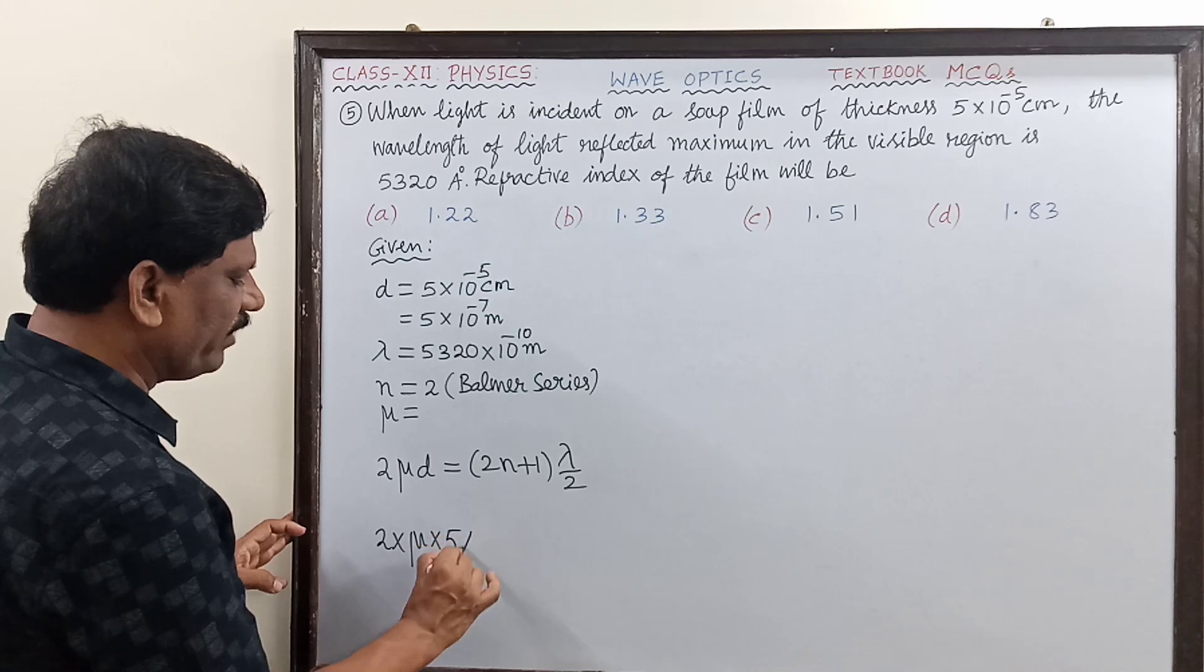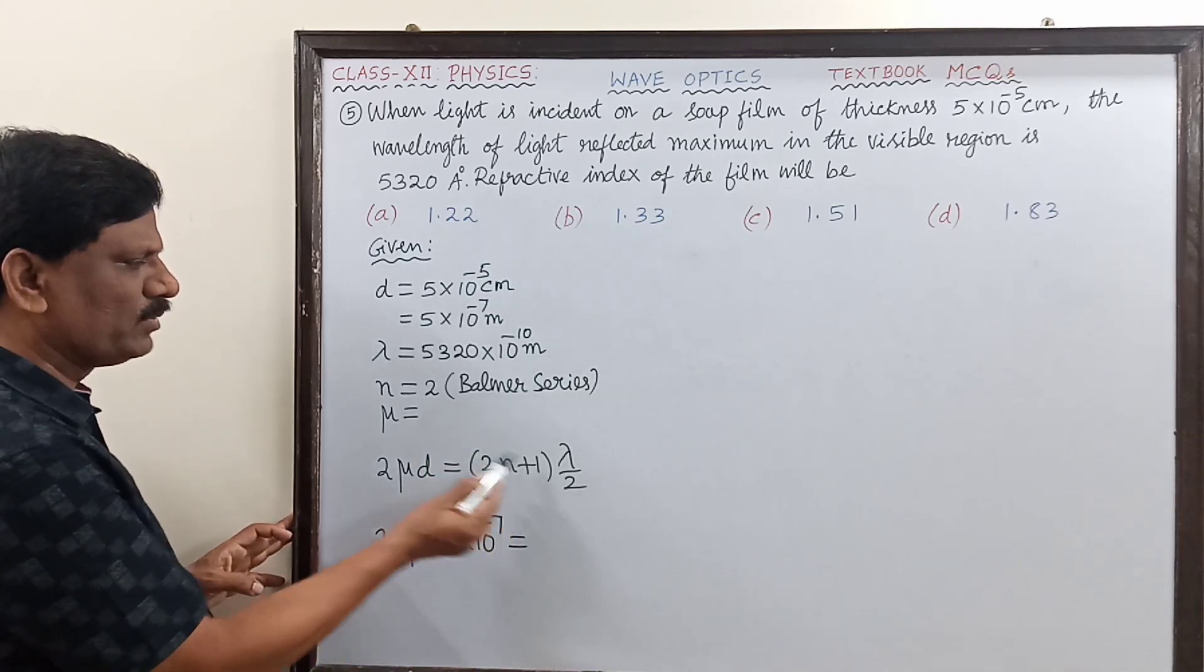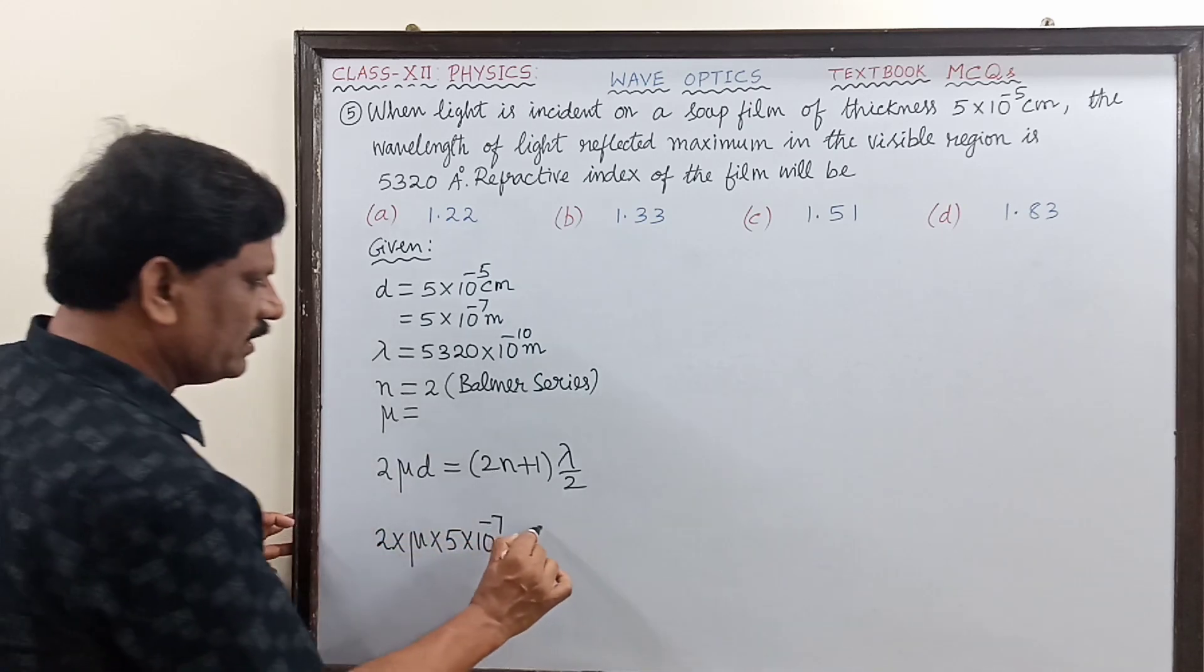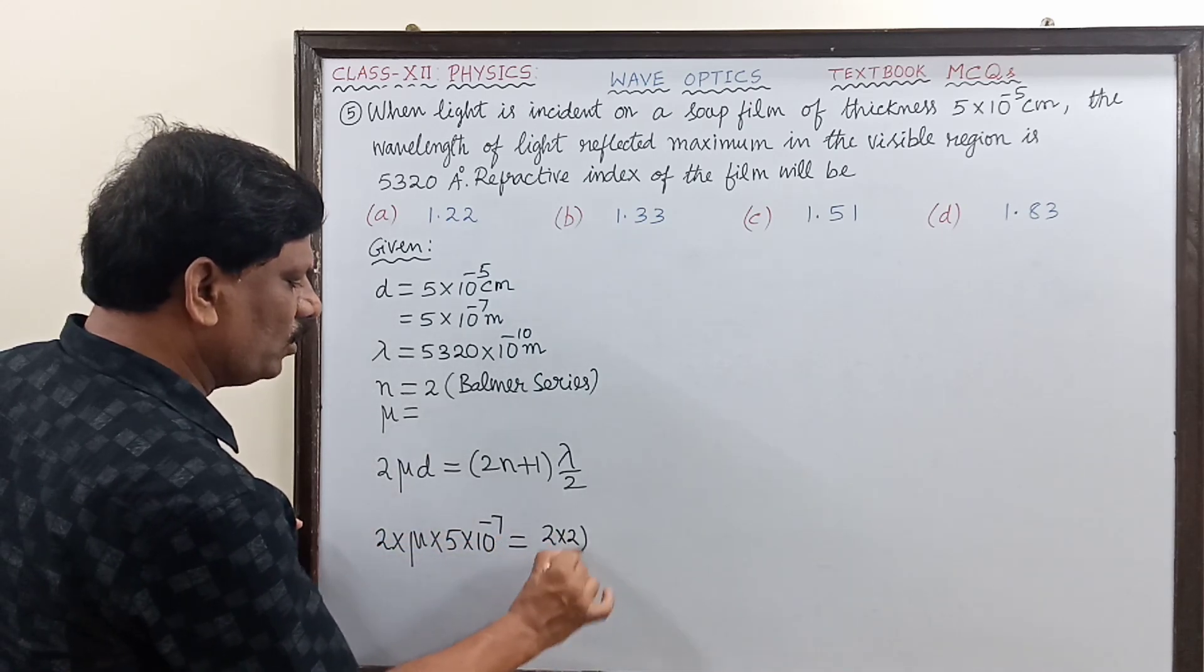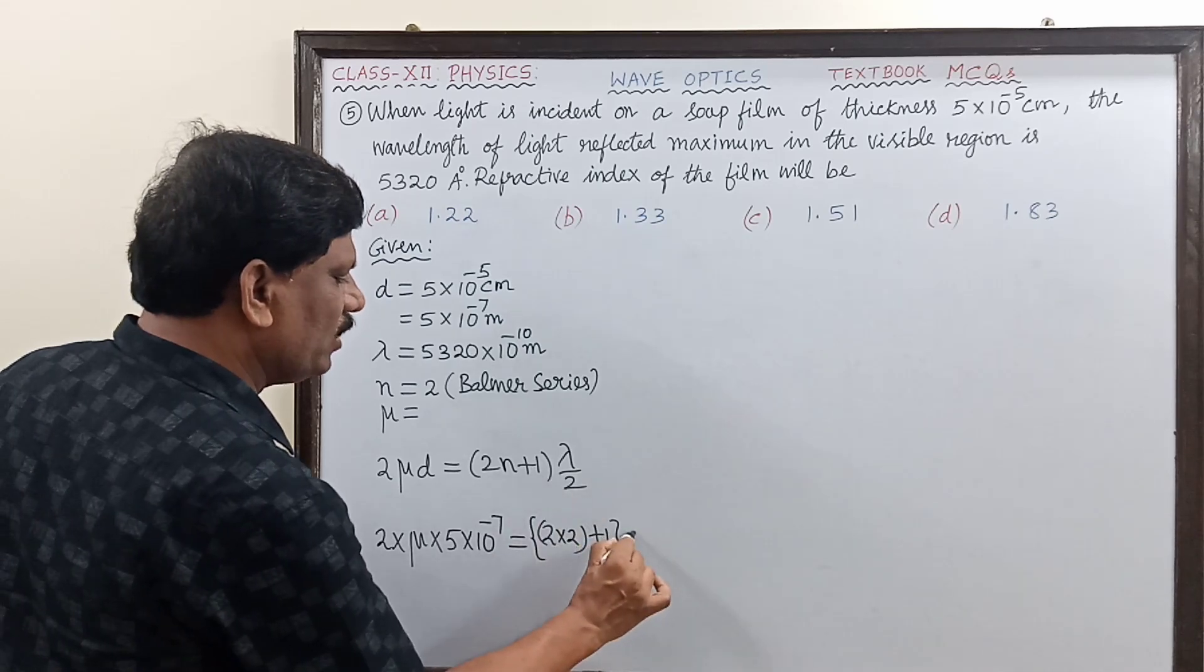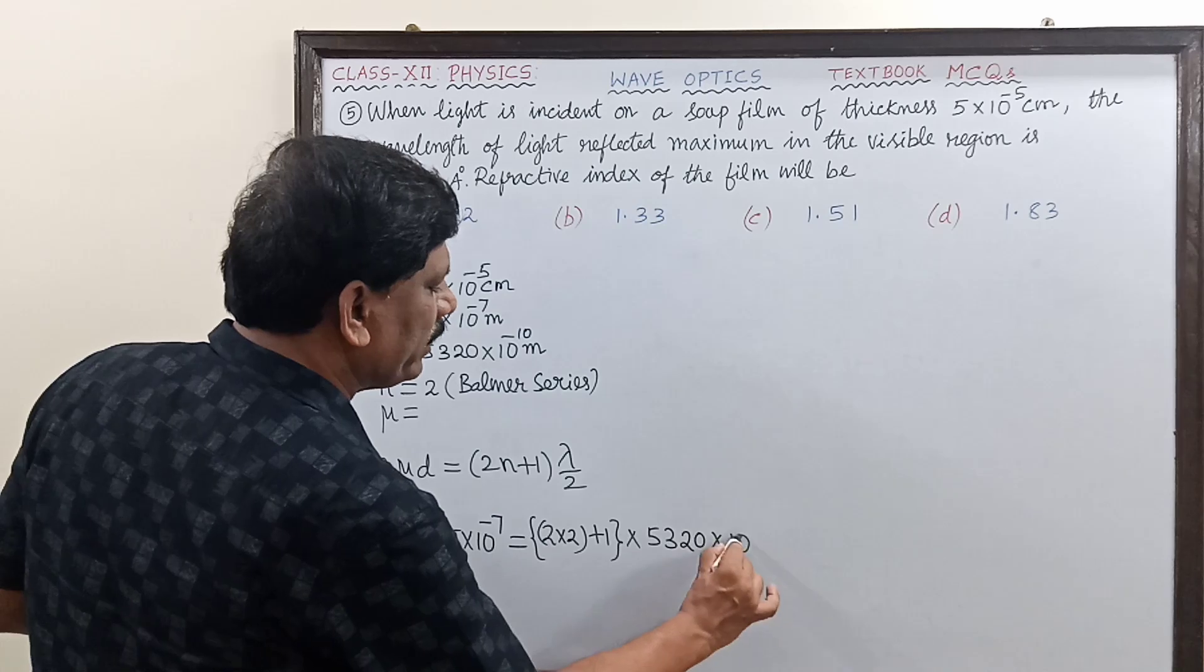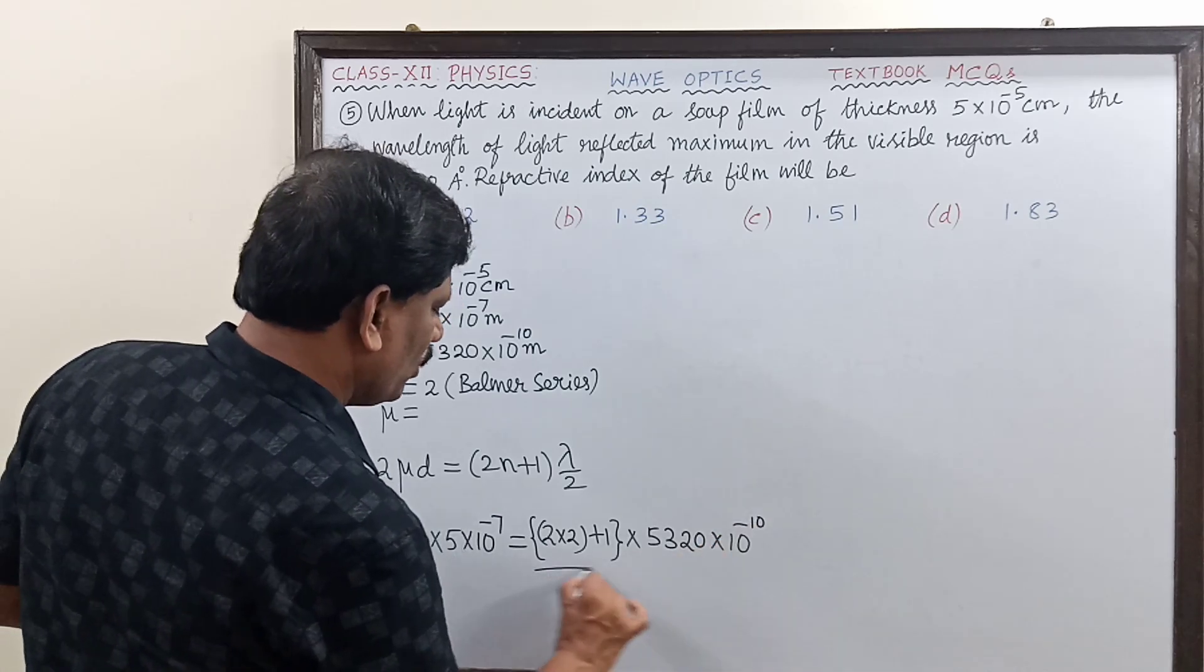So 2×μ×5×10⁻⁷ = (2×2+1)×5320×10⁻¹⁰/2, which is (2×2+1) equals (4+1), so 5×5320×10⁻¹⁰ divided by 2.